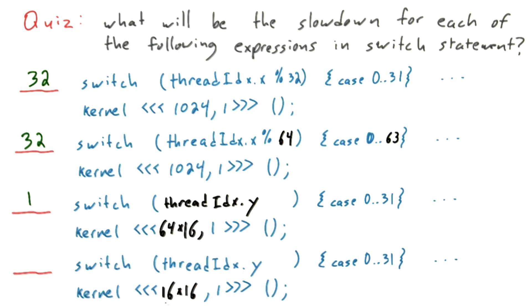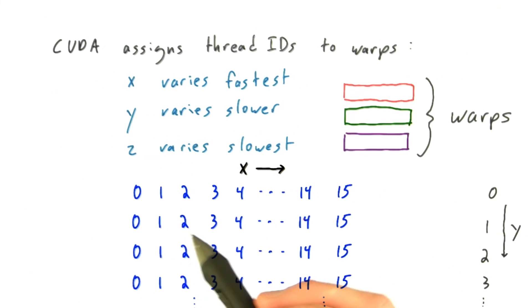What about this next case where we've got a smaller thread block that has 16 by 16 threads? In this case, we only have 16 X IDs that it can assign to a warp, before it has to change to the next Y ID and start assigning the next set of X IDs.